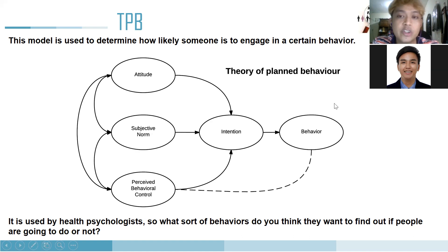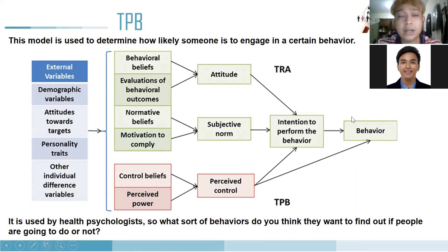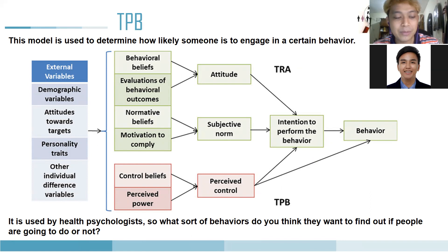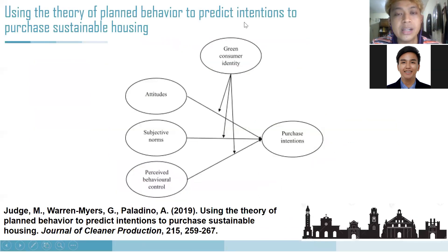Each latent is measured by several indicators. People can modify the original TPB by adding new latent variables. For example, you could study TPB in the context of elections — what process leads someone to actually vote. Another example: green consumer identity, attitude, subjective norm, perceived behavioral control leading to purchase intention of sustainable housing — with green consumer identity added as a new latent.